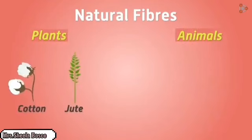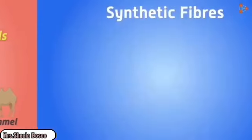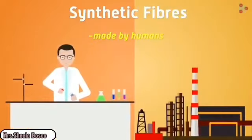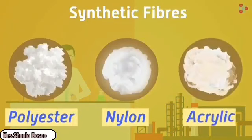From animals we get fiber from silk moth, goat, sheep, and camel. Synthetic fibers are made in the lab where petroleum products are made into plastic — thin plastic only, that is synthetic fiber — thin threads. These include polyester, nylon, and acrylic. All your uniforms are polyester, that's why you sweat a lot.